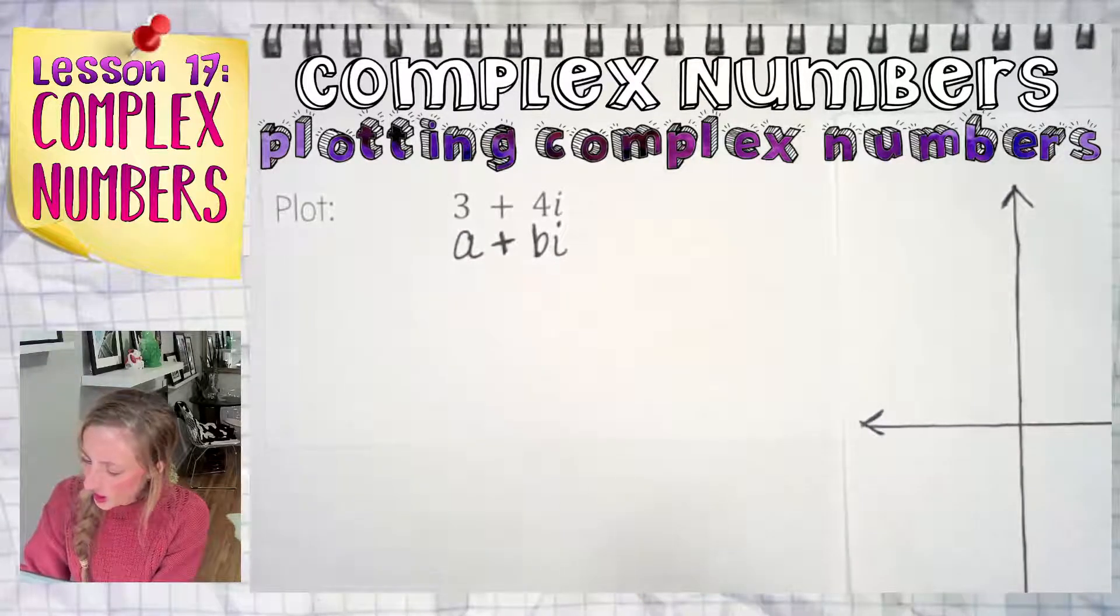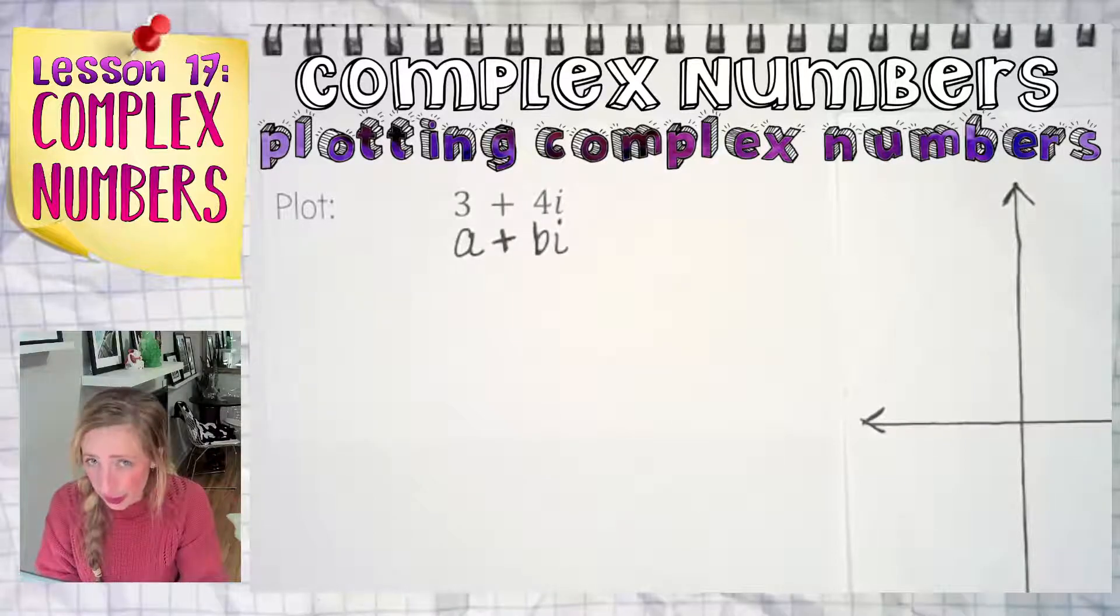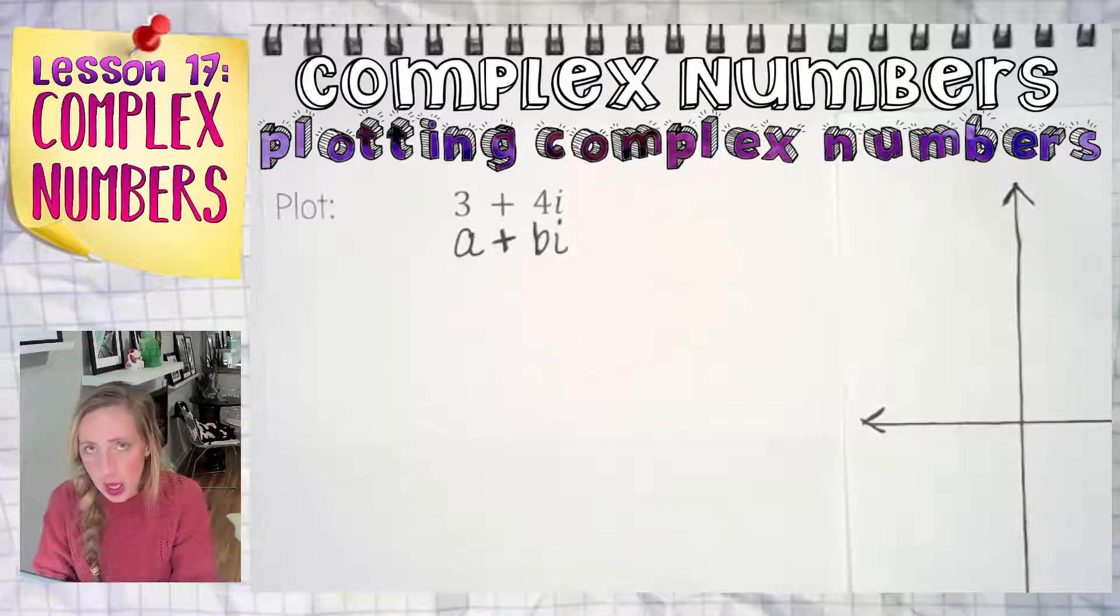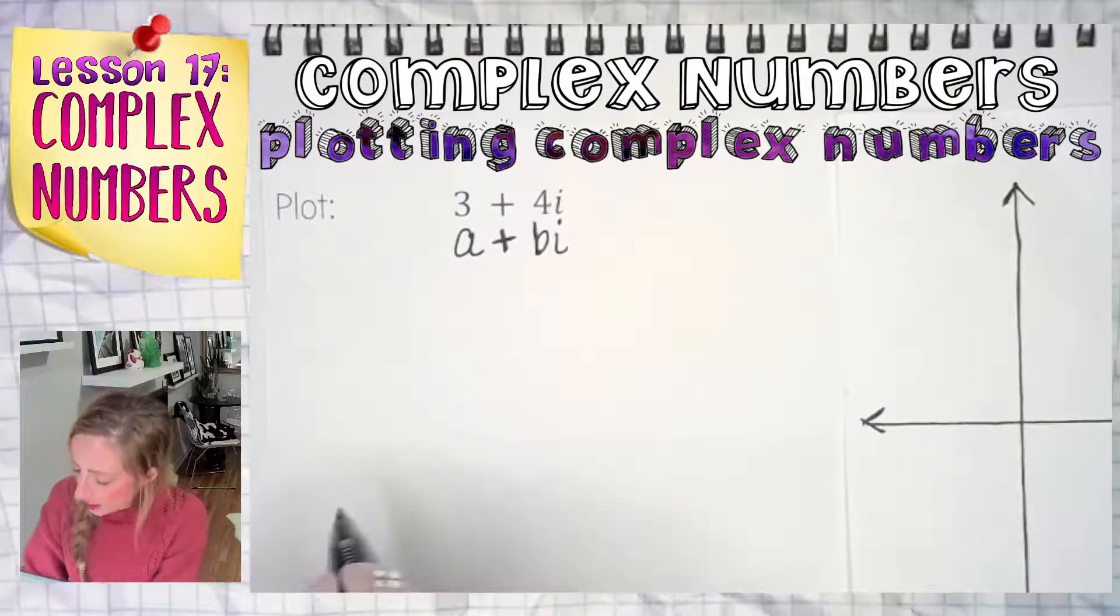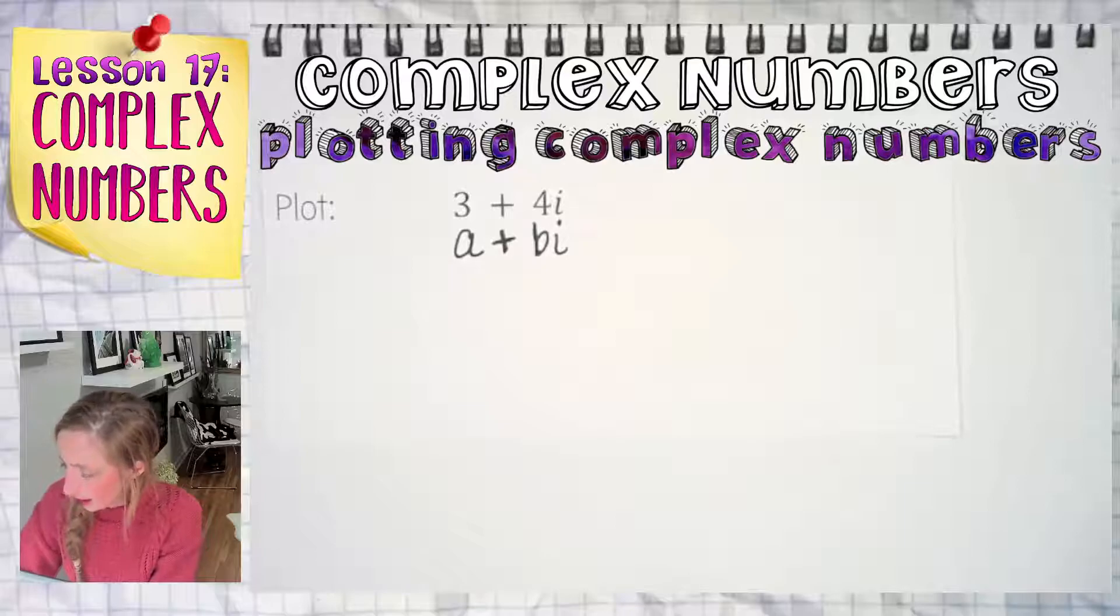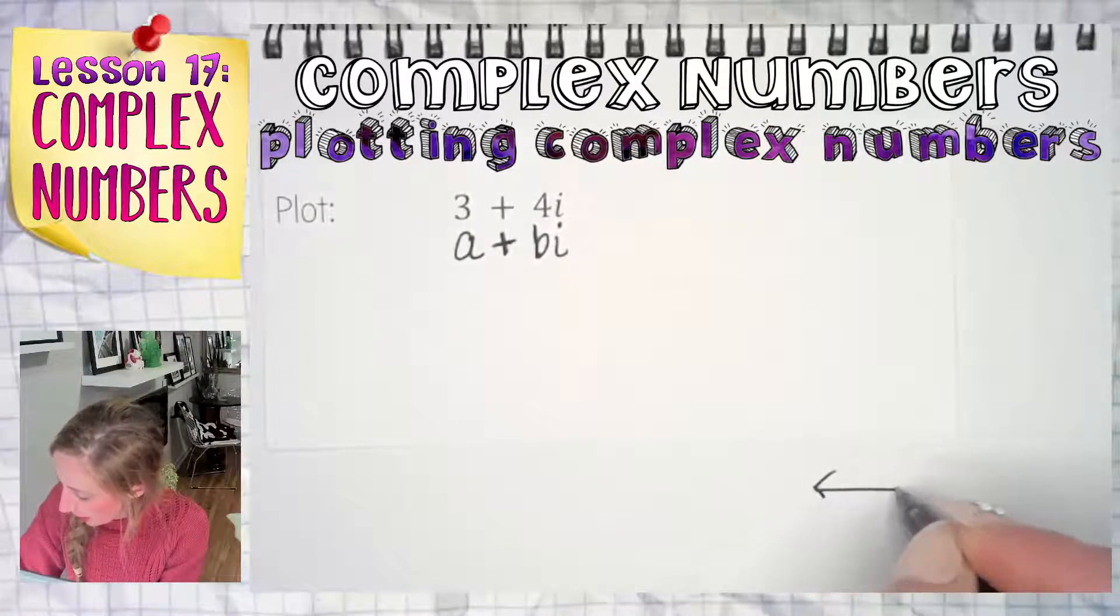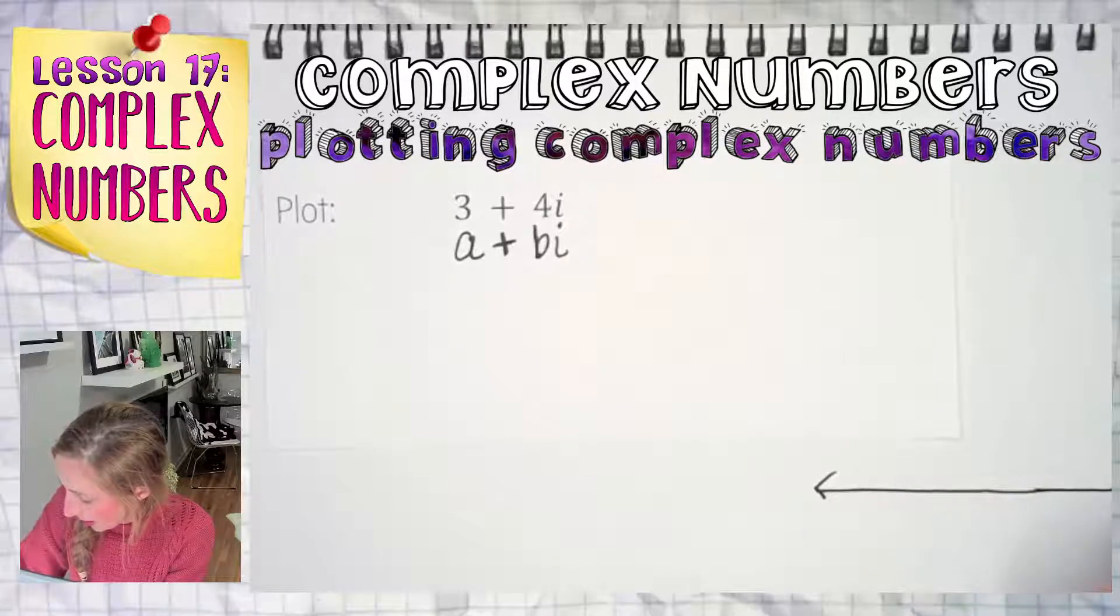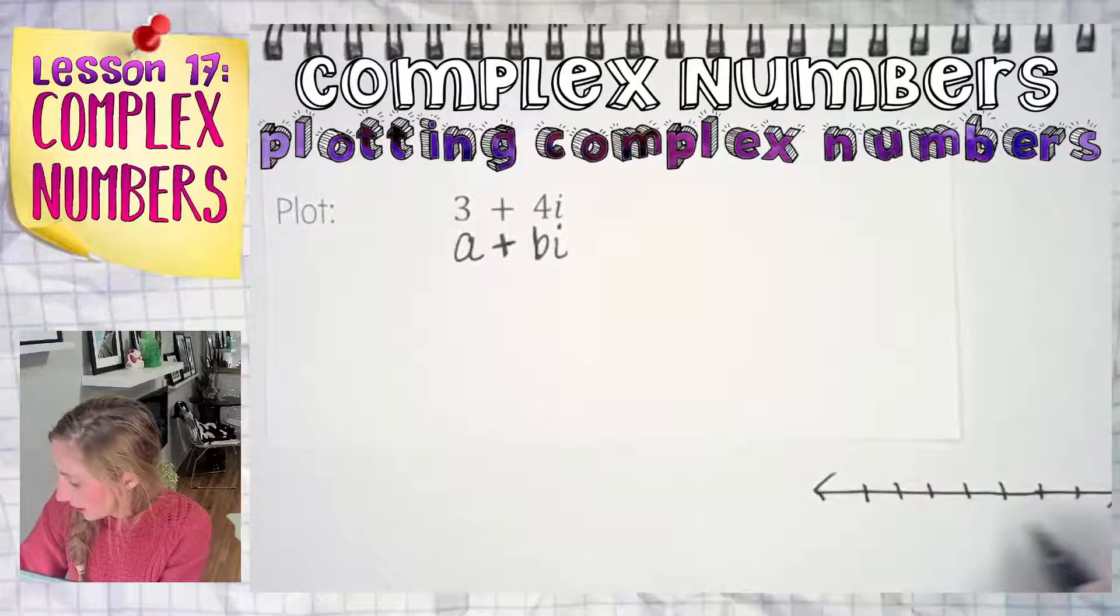Now, even though three plus four I is a single number, kind of like plotting a number on a number line when you're a kid, right? Like you're a little kid on your desk in first grade and your teacher gives you a little number line. They give you a little number line on your desk. Maybe one, two, three, four, five, six, and seven.